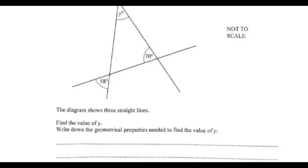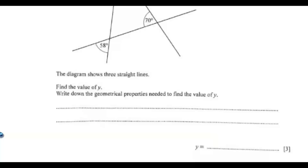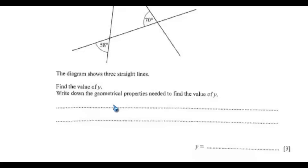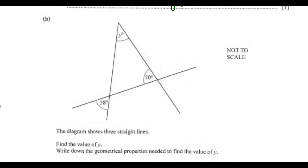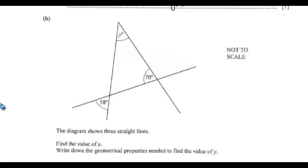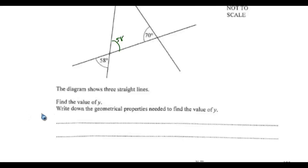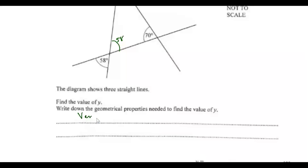Part b: the diagram shows three straight lines. Find the value of y and write down the geometrical properties needed to find the value of y. We'll write the geometrical properties first, then find the value of y. You can see vertically opposite angles — this place will be 58 degrees.